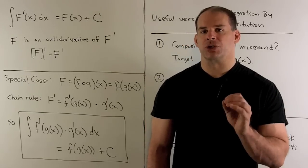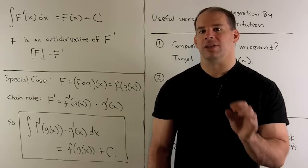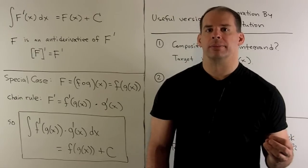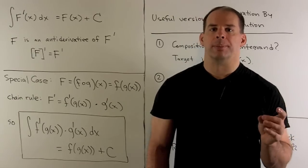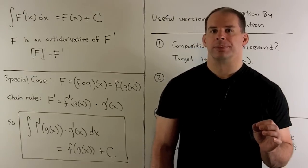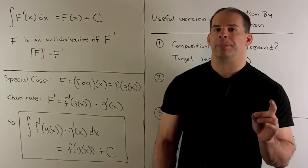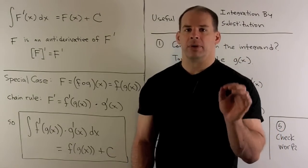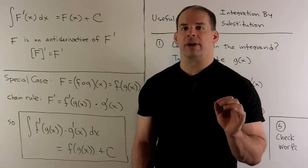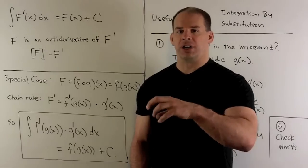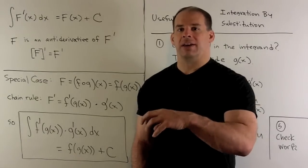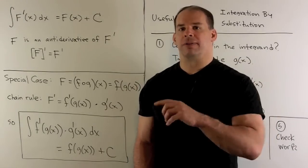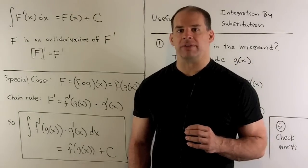There's a theme here — we're starting with the chain rule and working our way backwards. Now, remember the problem that we're trying to solve here: finding an anti-derivative. We're starting with a function and we're asking, find me a function that has our original function as its derivative.